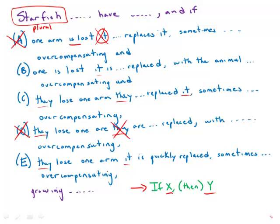In B we have 'one is lost then it is replaced,' okay, so passive passive. 'They lose one arm they replace it' - active active. 'Lose are replaced' - so active passive. 'Lose one arm it is quickly replaced' - so active passive. So E is out on that count also.